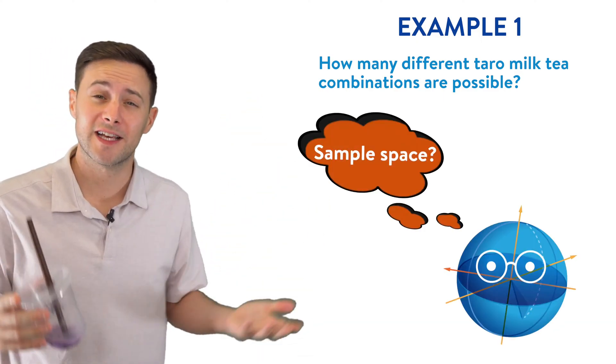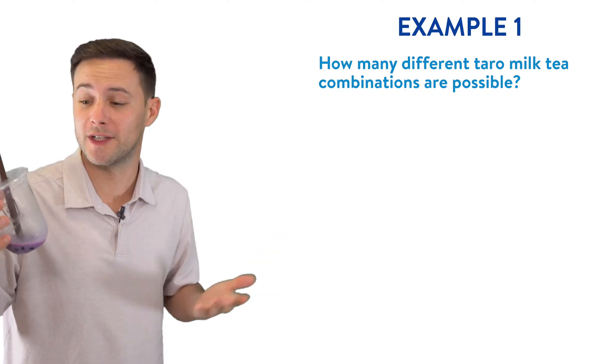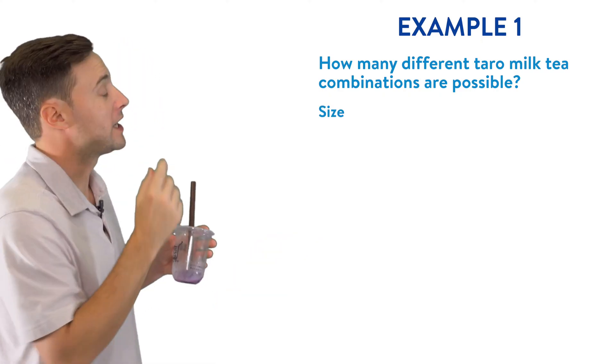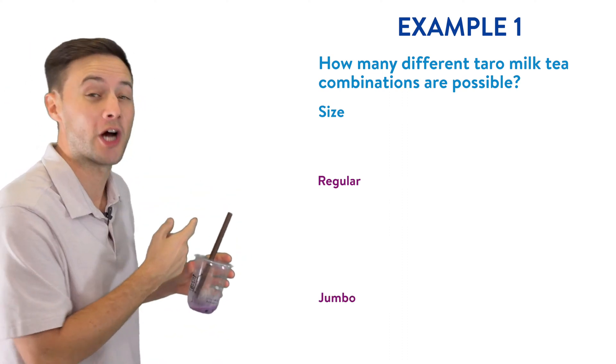Example one. This question is essentially asking us, what is the sample space? The first choice we got to choose is the size. We can either choose a regular, which is what I got, or if you're extra thirsty, you could go with a jumbo.